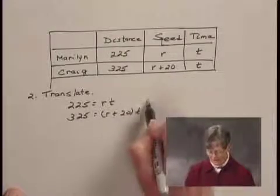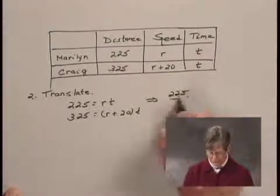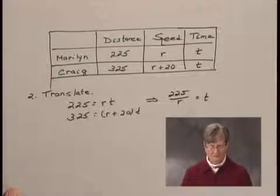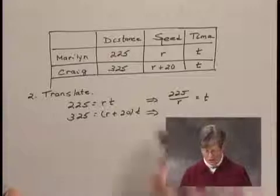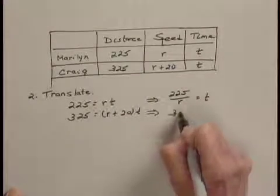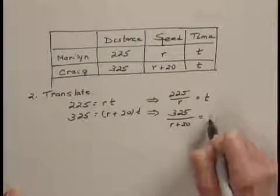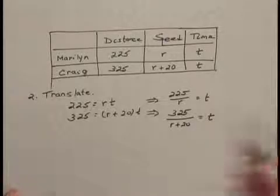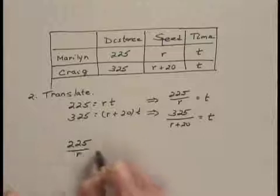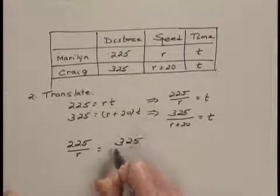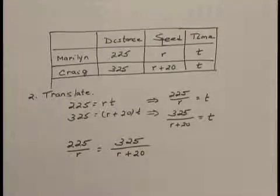Since 225 equals R times T, if we divide both sides by R, we get 225 over R equals T. And since 325 equals R plus 20 times T, if we divide both sides by R plus 20, we get 325 over R plus 20 equals T. And again, we said the times are the same, so that tells us that we can write the equation 225 over R equals 325 over R plus 20. And this is the equation that we want to solve.